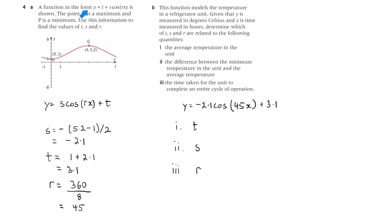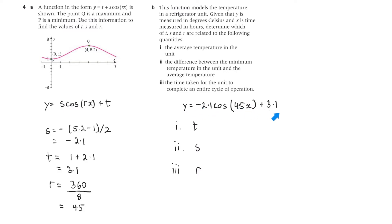We're still looking at this function here. So our function is y equals minus 2.1 cosine 45x plus 3.1. The average temperature in the unit would be t, because that's the centre line — it's the average.